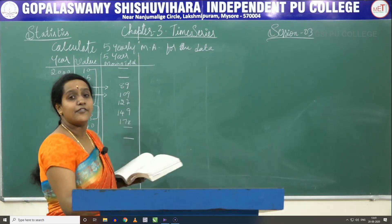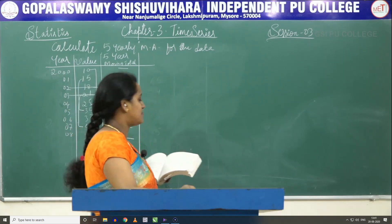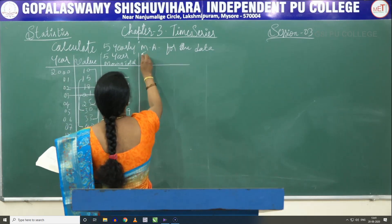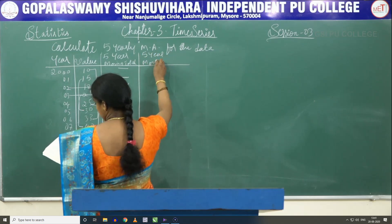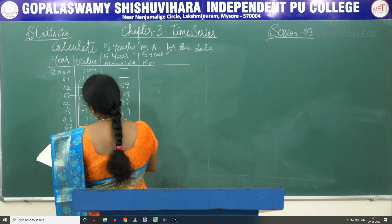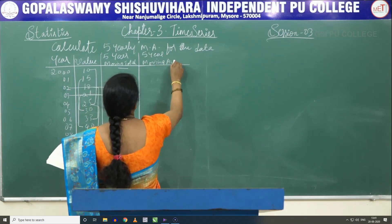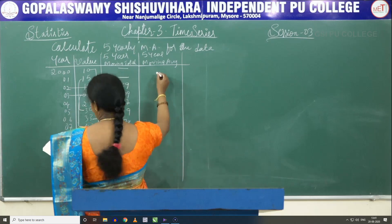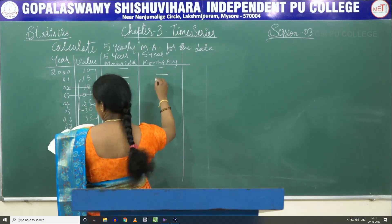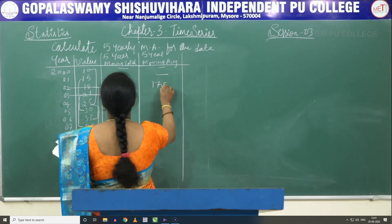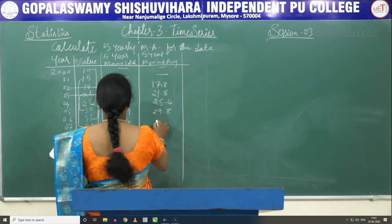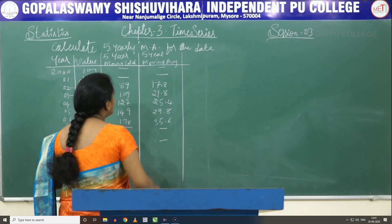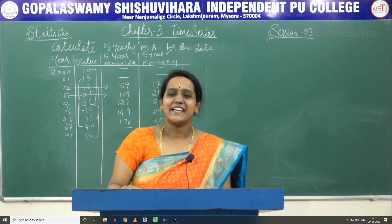Since we have added 5 years, we divide by 5 to get the five-year moving average, also called the trend values. The trend values are: 17.8, 21.8, 25.4, 29.8, and 35.6. The first 2 and last 2 entries will be blank.